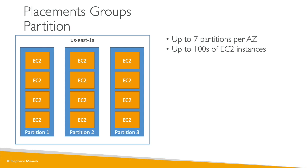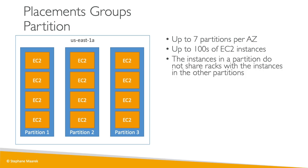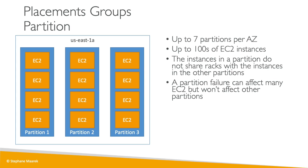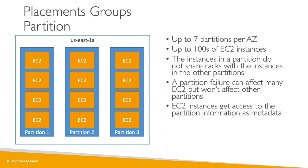There are up to seven partitions per AZ and up to hundreds of EC2 instances as part of that placement group — that is the key difference versus the spread placement group. Instances in a partition do not share racks with instances in other partitions, so a partition failure can affect many EC2 instances but won't affect other partitions. EC2 instances can access metadata representing which partition they belong to. Use cases include distributed big data applications: HDFS, HBase, Cassandra, and Kafka.